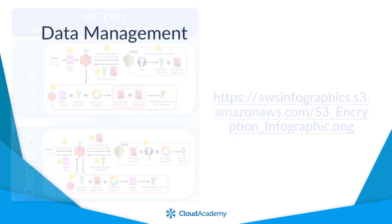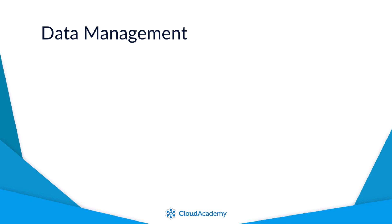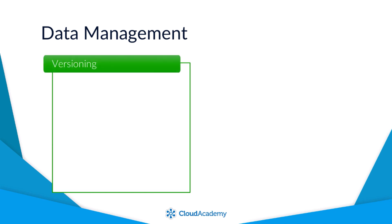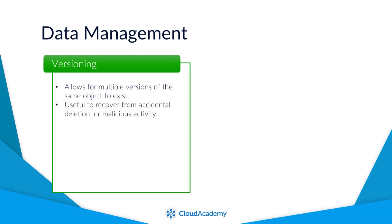I now want to discuss a couple of features relating to data management, starting with versioning. When you enable versioning on a bucket, it allows for multiple versions of the same object to exist. This is useful to allow you to retrieve previous versions of a file or recover from accidental or malicious deletion of an object. Versioning is managed automatically by the bucket when you overwrite the same object, and S3 will only display the latest version within the console, but provides a way of viewing all previous versions when needed.